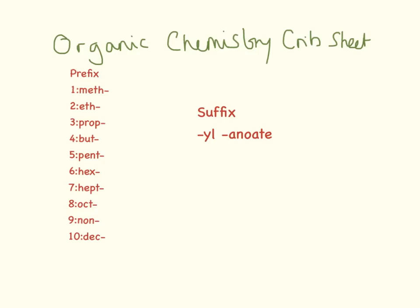Esters actually have a first name and a surname. The naming of the first part is exactly the same as all the other ones — the first name will end in '-yl' and the second name will end in '-anoate'.